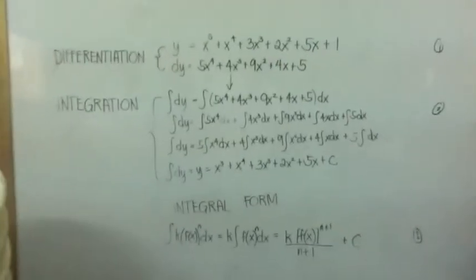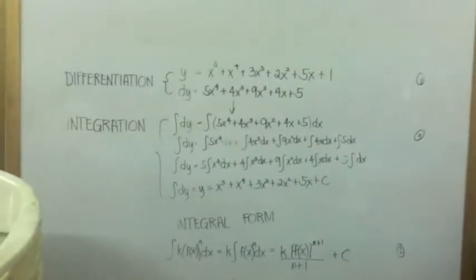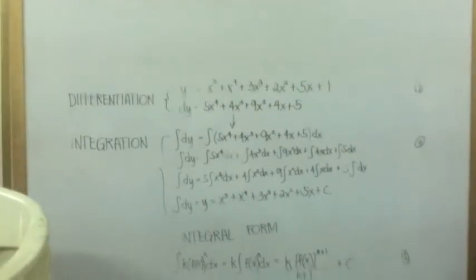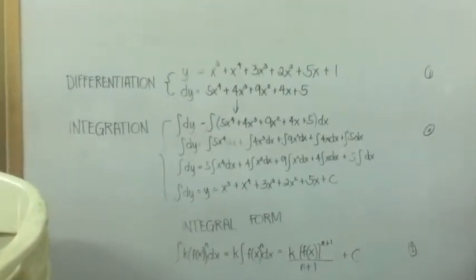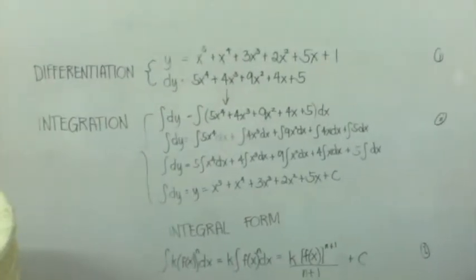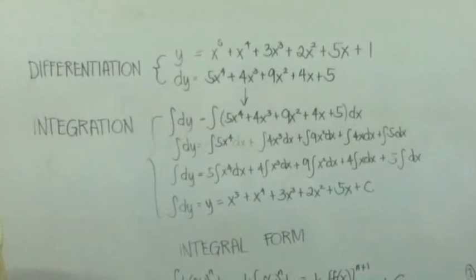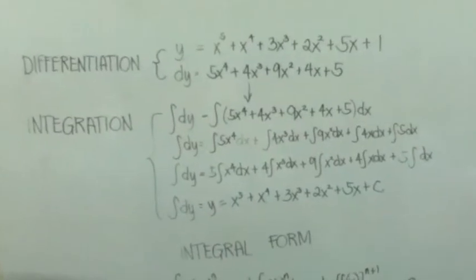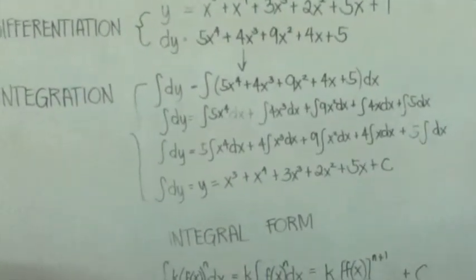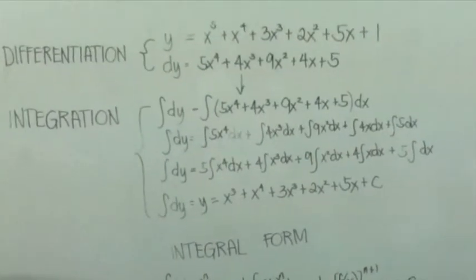In this first expression, add 1 to the exponent and you will get 5. Then divide the whole expression by the acquired sum, which is 5, and there you get its integral. 5x to the 4th would be x to the 5th. When you're done evaluating, add all the values you got, and there you have solved its integral.